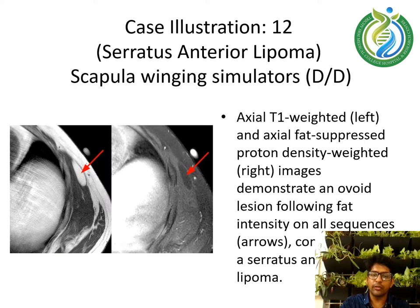Case illustration 12 — Serratus Anterior Lipoma. Axial T1-weighted and axial fat-suppressed proton density-weighted images demonstrate an ovoid lesion following fat intensity on all sequences, consistent with a serratus anterior lipoma.